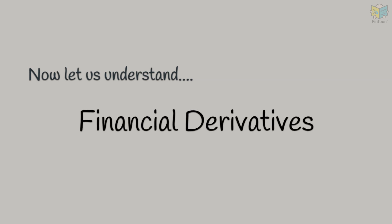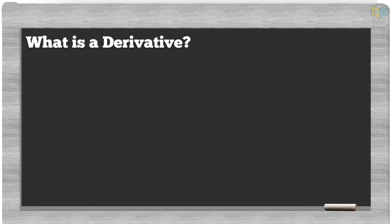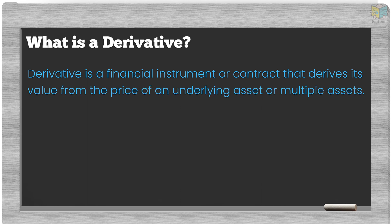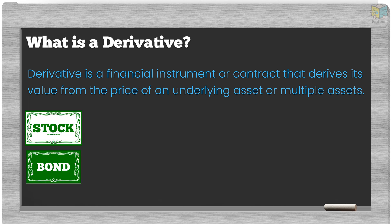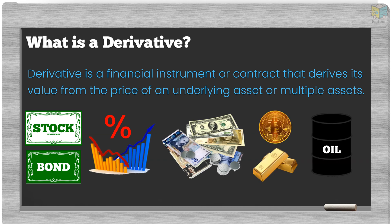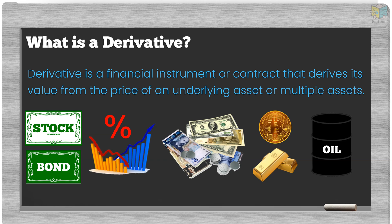Now, let us understand derivatives in finance. What is a derivative? A derivative is a financial instrument or contract that derives its value from the price of an underlying asset or multiple assets — that can be equities, bonds, an index, interest rates, currencies, cryptocurrencies, commodities, etc. The value of the contract depends on the price fluctuations of the underlying asset.